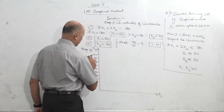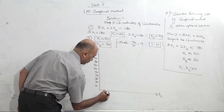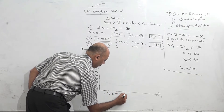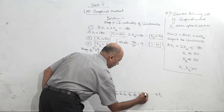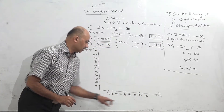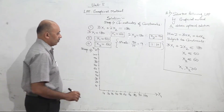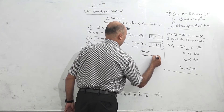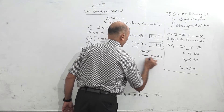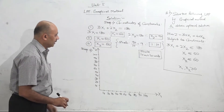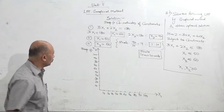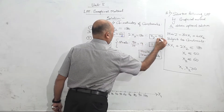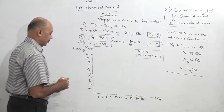Now we have plotted the numbers on the graph. Write the scale on the top of the graph paper: 1 centimetre equal to 10 units. Always write the scale on the graph. Now we will give names to these coordinates so it will be easy to identify. Let us say this is point A, this is point B, this is point C, and this is point D.